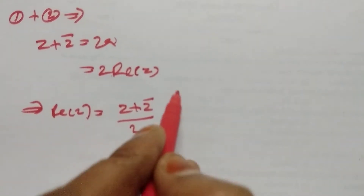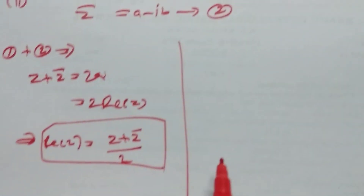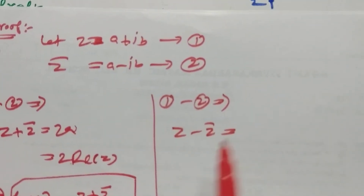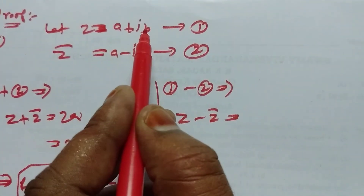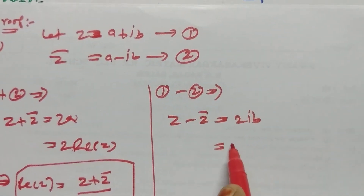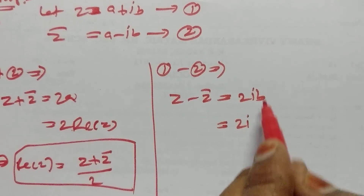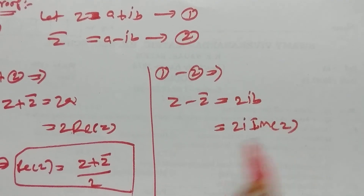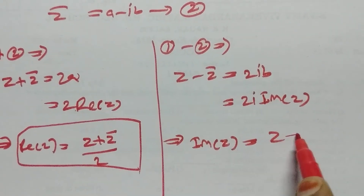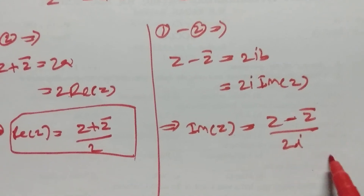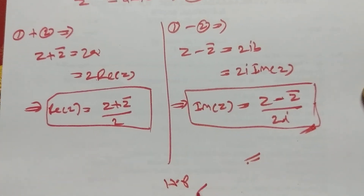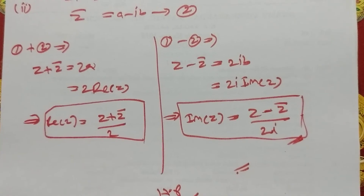So z minus z-bar equals (a plus ib) minus (a minus ib), that is ib plus ib equals 2ib. So the imaginary part of z equals 2ib divided by 2i equals b. Hence image part of z equals (z minus z-bar) divided by 2i. Hence proved. Thanks for watching.